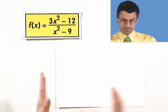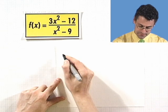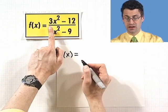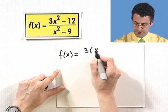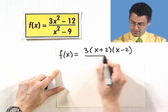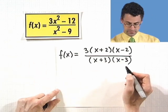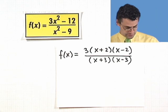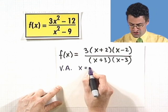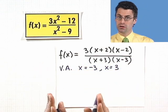Here is the rational function I want us to consider. Let's factor — first thing I always do is factor. I can pull out a factor of 3, giving 3 times x squared minus 4. That's the difference of two perfect squares, so I have 3 times (x plus 2)(x minus 2) divided by (x plus 3)(x minus 3). Now it's all factored. For vertical asymptotes, the denominator equals 0 at x equals negative 3 and x equals 3 — two vertical asymptotes.